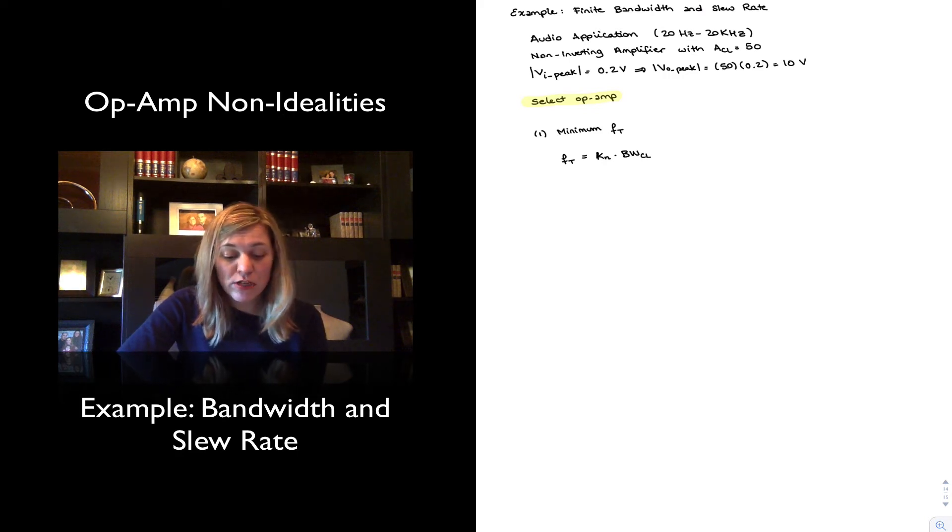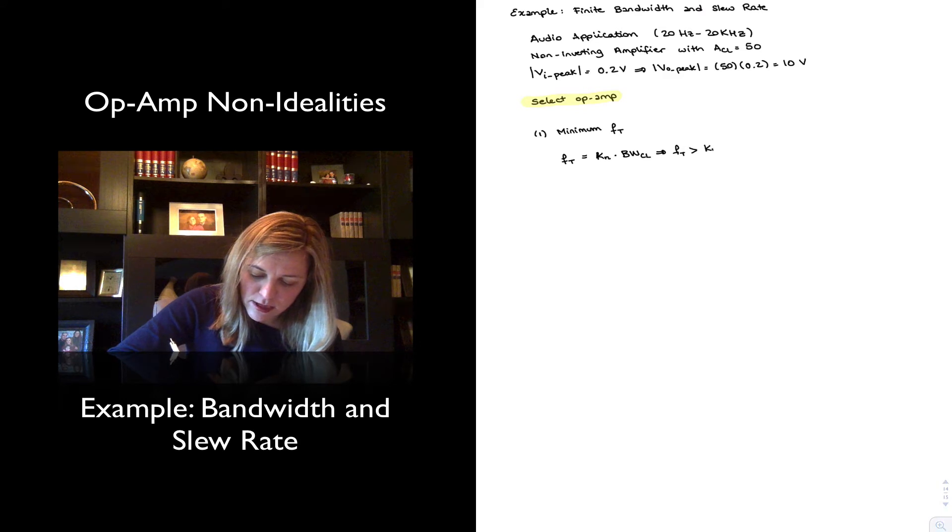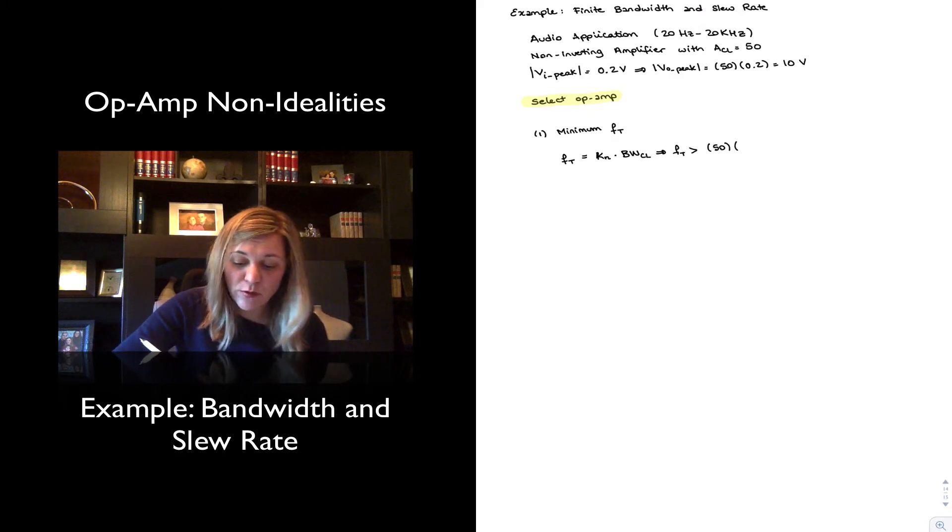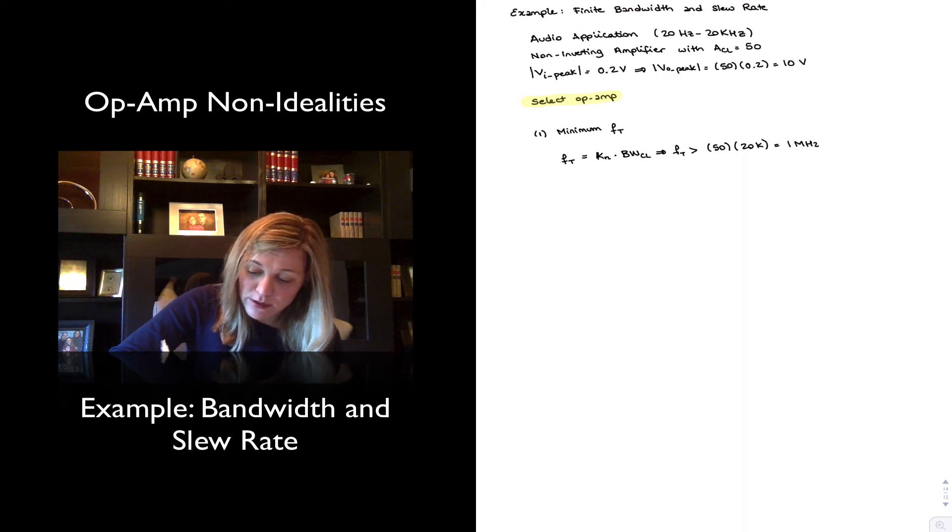Now, the closed-loop bandwidth, obviously, if we want to use this in an audio application, we want that closed-loop bandwidth to be greater than 20 kilohertz. And so I can say in my limit, I will say I want my fT to be greater than KM, which is 50, times the closed-loop bandwidth, which again is going to be 20k. And so that means that I want my transition frequency to be greater than 1 megahertz.